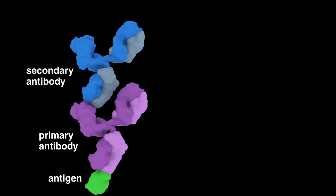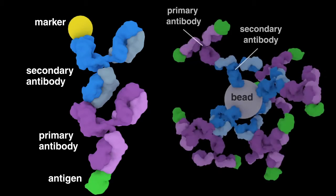When detection or isolation of a protein is desired, researchers commonly use a combination of two antibodies, primary and secondary antibodies. Primary antibodies bind to specific antigens, while secondary antibodies are made to recognize and bind to the constant region of primary antibodies, which is the same within a given species. Depending on the application, secondary antibodies might be conjugated to a marker or bead, which allows for easy detection or isolation of the protein of interest.